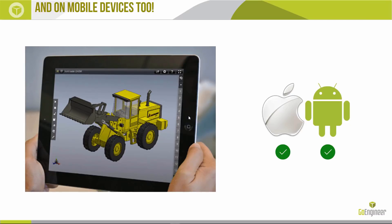eDrawings also works on mobile devices for both iOS and Android. There's a standard eDrawings app for $1.99 in your app store and a professional version for $9.99. The standard mobile viewer matches the Windows standard viewer, while the mobile professional version gives you measure and markup ability, though it doesn't allow you to enable markup on other parts' files, save as STL, or password protect files — but you can do all of that from the Windows professional version.